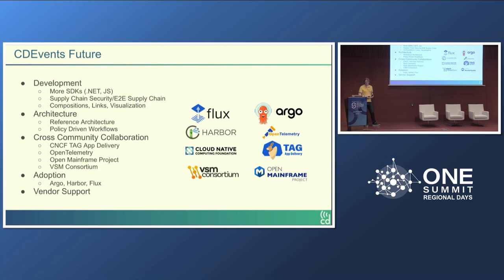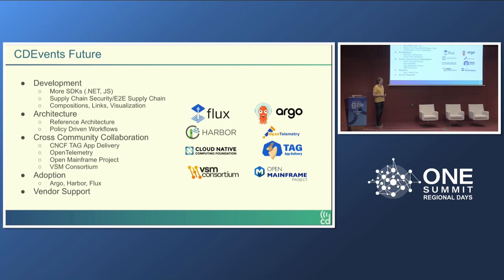We also have interesting discussions with the Open Mainframe Project. Additionally, we're collaborating with the Value Stream Management Consortium — they work with tools that track features from definition all the way to when they reach users and are interested in tracking how long it takes for a feature to be defined, implemented, and what value it brings to users, which overlaps significantly with what we do on the CD Events side. We will continue working with more and more communities; we've reached out to the Argo and Flux communities as well, trying to get CD Events known and adopted by as many communities as possible.